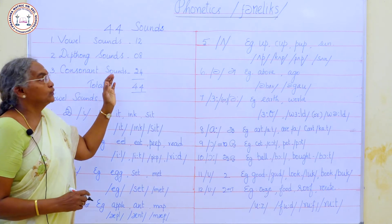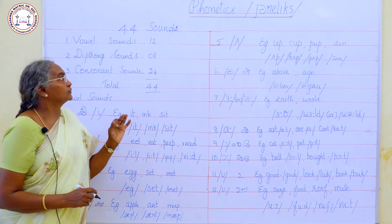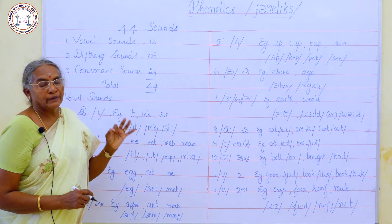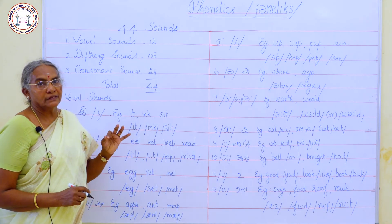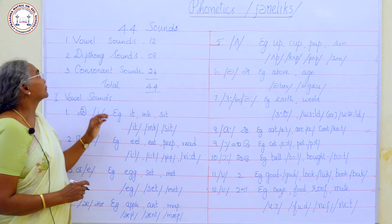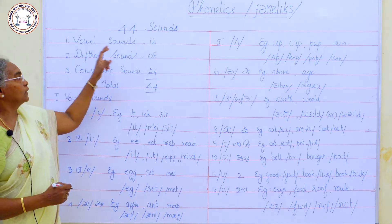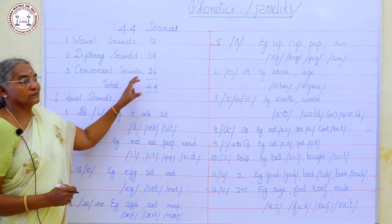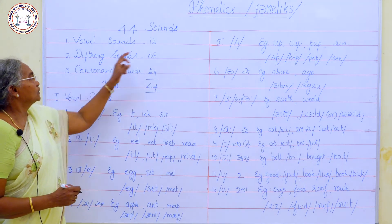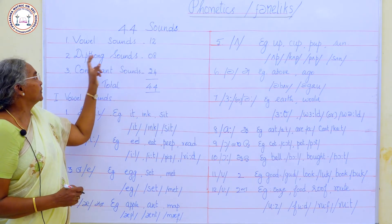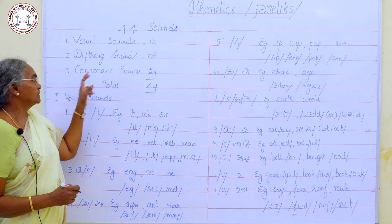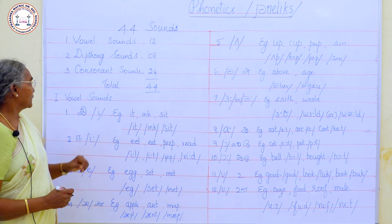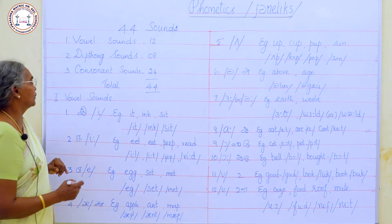There are 26 letters in English but 44 sounds. The 44 sounds are: 12 vowel sounds, 8 diphthong sounds, and 24 consonant sounds. Let us now look at the vowel sounds.